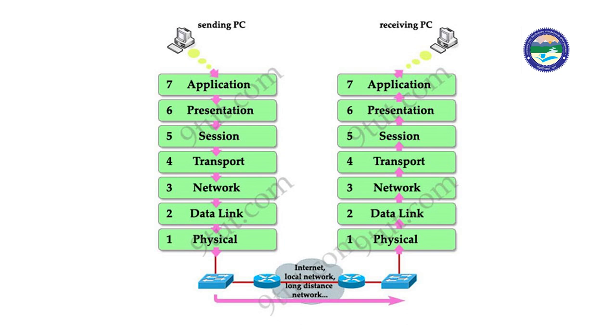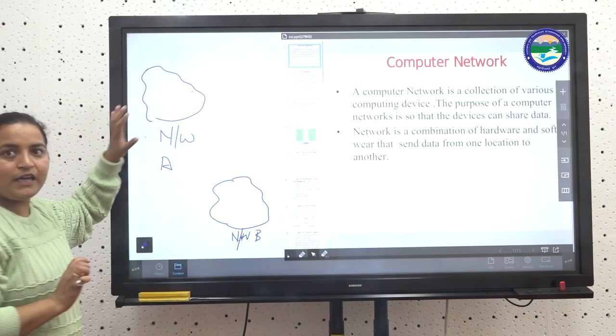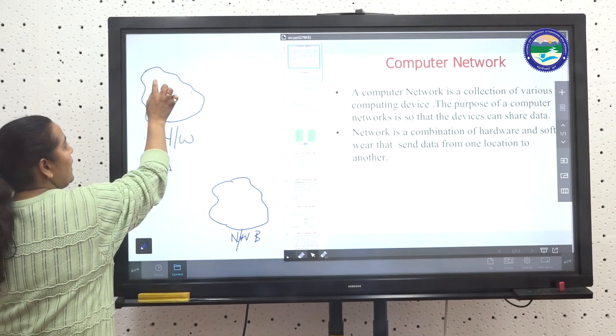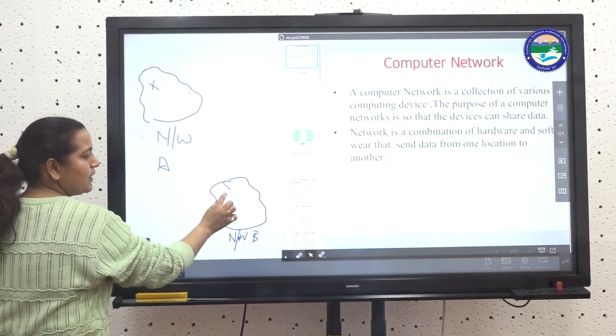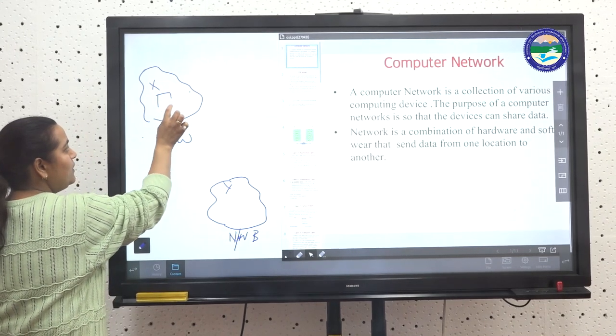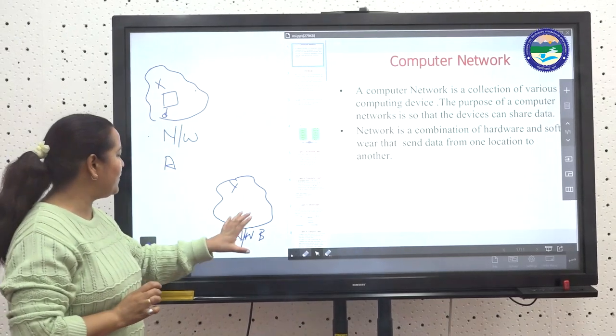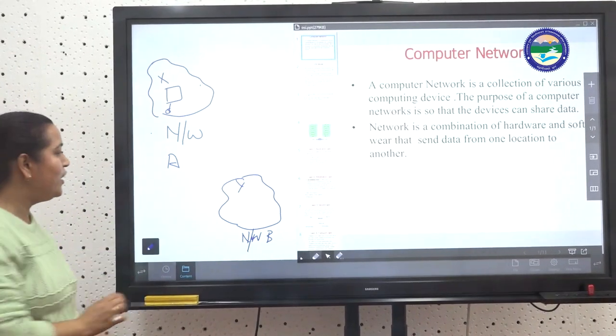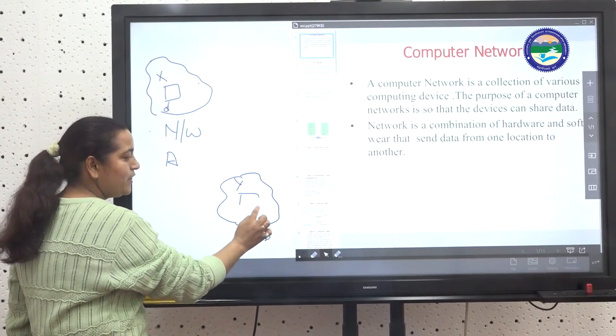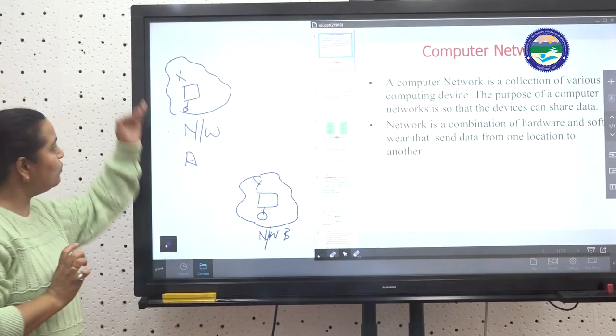In the OSI model, the work of each layer is different. We will see this in detail. In network A, one person X is using a terminal or machine. In network B, one person Y is using a terminal.